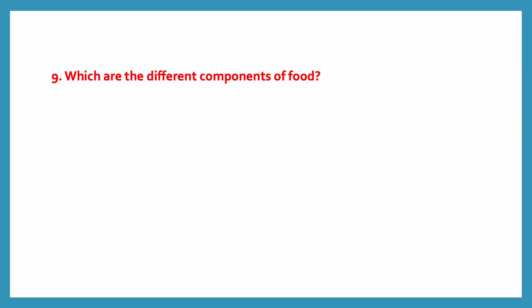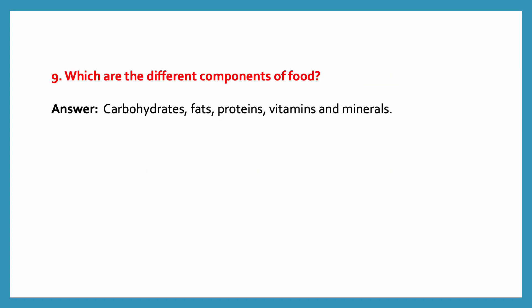Which are the different components of food? Carbohydrates, fats, proteins, vitamins and minerals. Carbohydrates and fats are energy-giving foods. Proteins are body-building food. Vitamins and minerals are protective food.